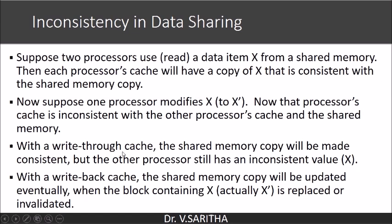If write-through cache is employed, when a processor updates x to x' the shared memory is also updated. But the other processor will still not update its value from x to x'. In the case of write-back cache, both the shared memory and the other processor will be inconsistent with the modifying processor until the block is replaced from that processor back into main memory.